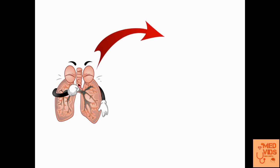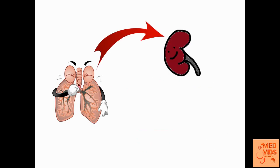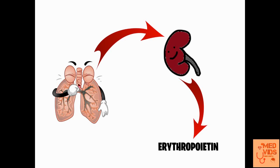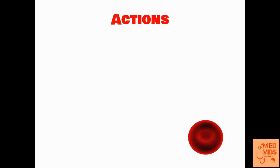When there is hypoxia, the kidneys have the capacity to sense it with the help of peritubular cells. The peritubular cells, in response to hypoxia, have the capacity to produce a hormone known as erythropoietin.